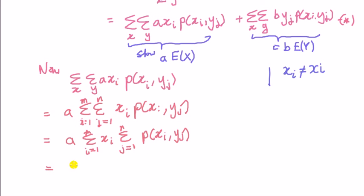Then observe summation i equal 1 to m of xi. But what is this? That's the sum of the joint probability mass function over j.